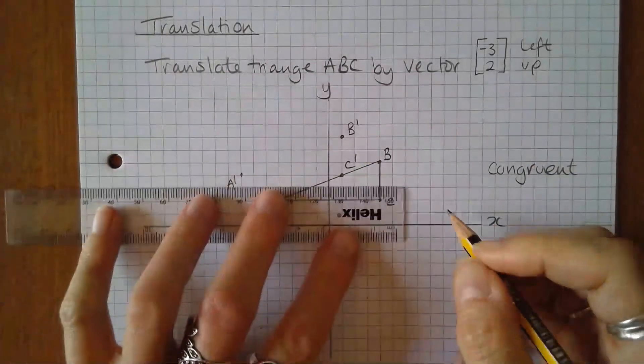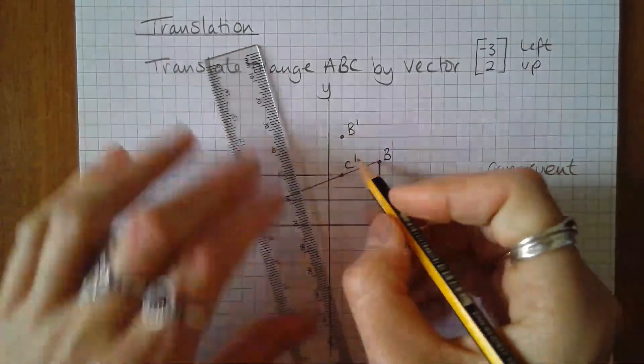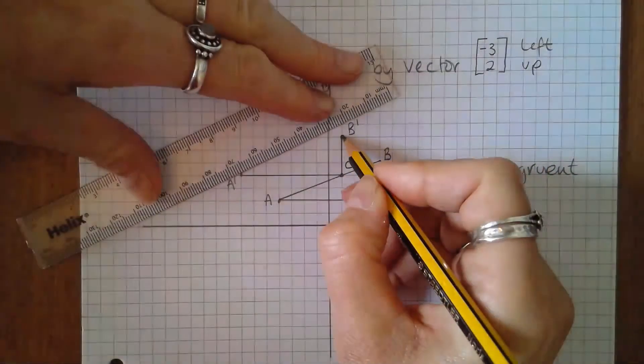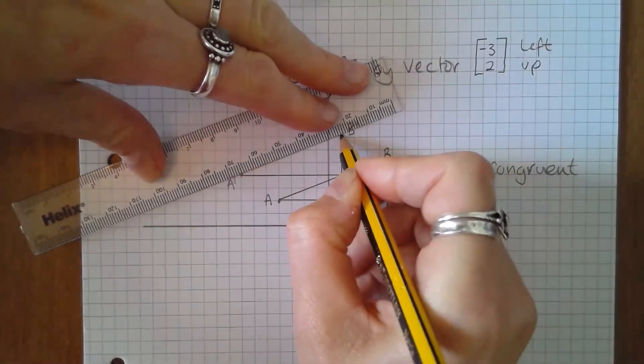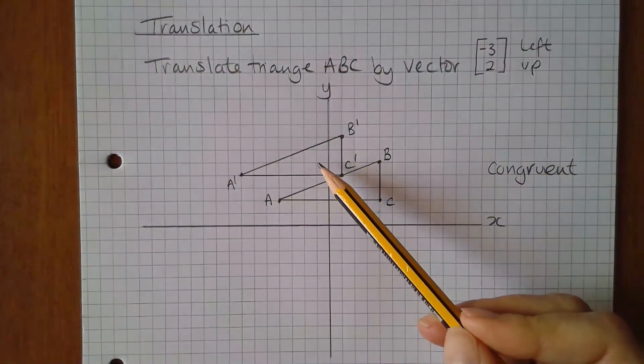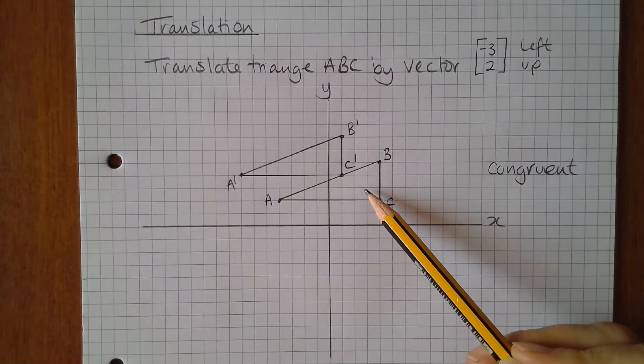Now I'll join up the vertices of the triangle and then check to see whether the new shape, the image, is exactly the same as the object, the original shape.